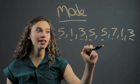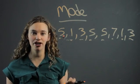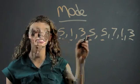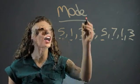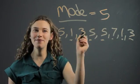So yes, more than one number occurs twice, but five occurred the most because there's three fives. So five is going to be the mode in this case.